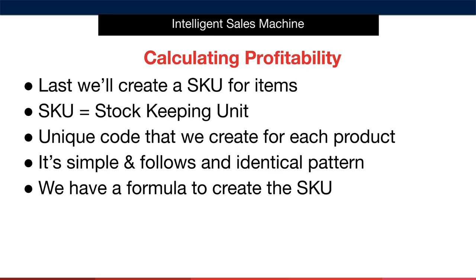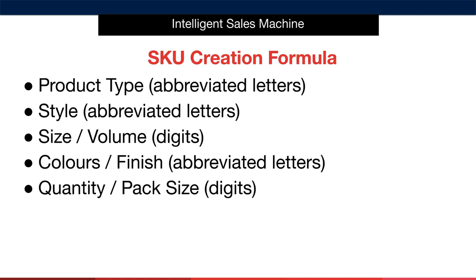The good news is that SKUs follow an identical pattern and take just minutes to create. We use a formula: first, we take the product type and display that as abbreviated letters. Next, we take the style and express that as abbreviated letters. Then we take the size or volume and display as digits. Then we take the colour or finish of the item as abbreviated letters. And finally, we take the quantity or pack size and express as digits. All of these are optional apart from product type, and you can leave out elements that aren't relevant to your product.